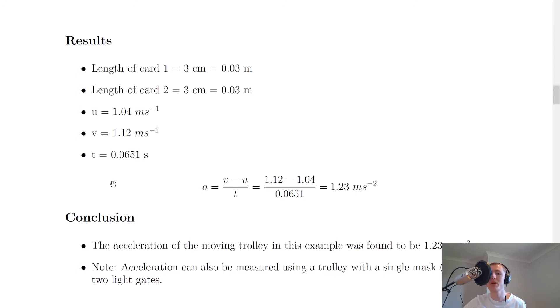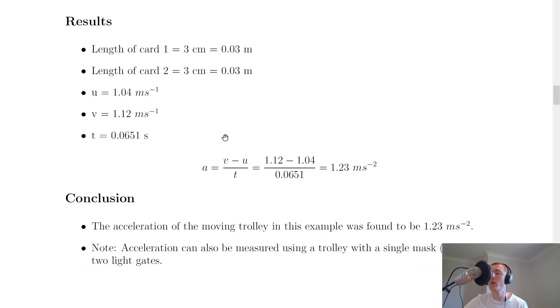Examples from the timer: we've got initial velocity of 1.04 meters per second, final velocity of 1.12 meters per second, and a time of 0.0651 seconds. Now, when you put all that into your equation here, you get 1.12 minus 1.04 divided by your time of 0.0651, which gives us an acceleration of 1.23 meters per second squared.